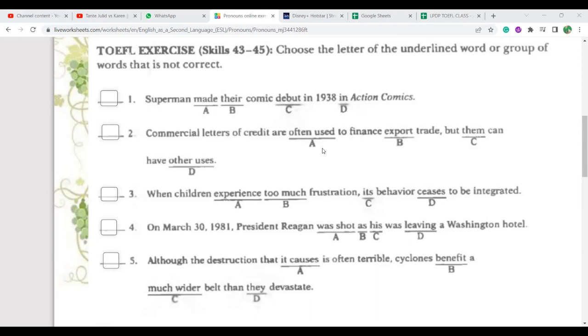Read one by one, from the back. Superman finished. B is wrong, finished, it should become his, because Superman is male and only one person, his. If it's Supergirl, then her. Superman made his comic debut in 1938 in Action Comics. Number two, C, what should it be? They. Okay, the meaning is wrong, it must be they. But they can have other uses.